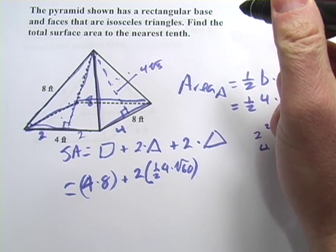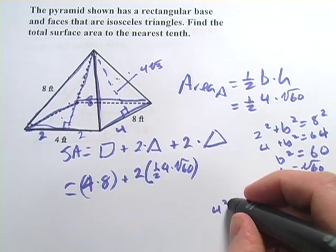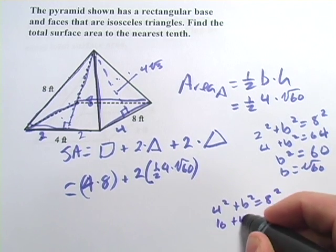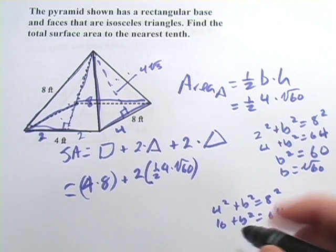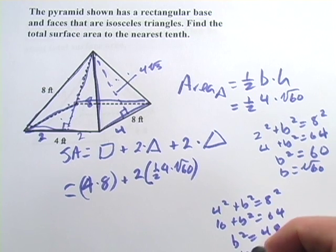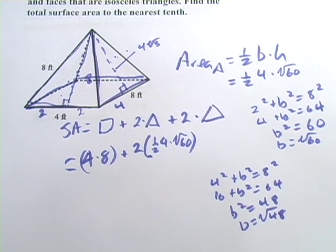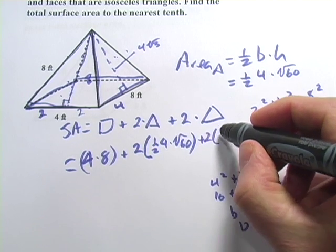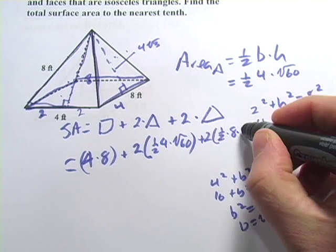You could also just use the Pythagorean theorem again and say four squared plus b squared equals eight squared. So you get 16 plus b squared equals 64. Or b squared equals 48. b equals the square root of 48. And we'll just go ahead and use that. Either way, it would be the same thing. And so this is going to be two times one-half times eight times the square root of 48.